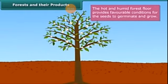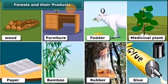Forests give us numerous products such as wood for furniture, fodder for animals, medicinal plants, paper, bamboo, rubber, gum, glue, and many more.